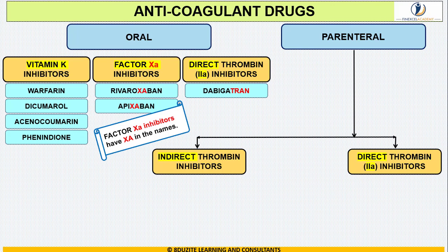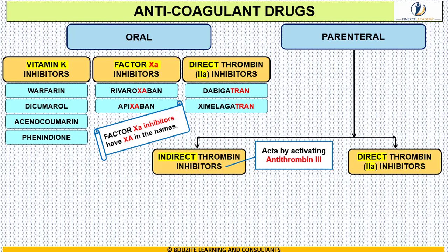Next are the oral direct thrombin inhibitors. In this group we have two drugs: dabigatran and ximelagatran. Both drugs end with the letters 'tran' — 'tr' reflects thrombin and 'an' reflects antagonist.